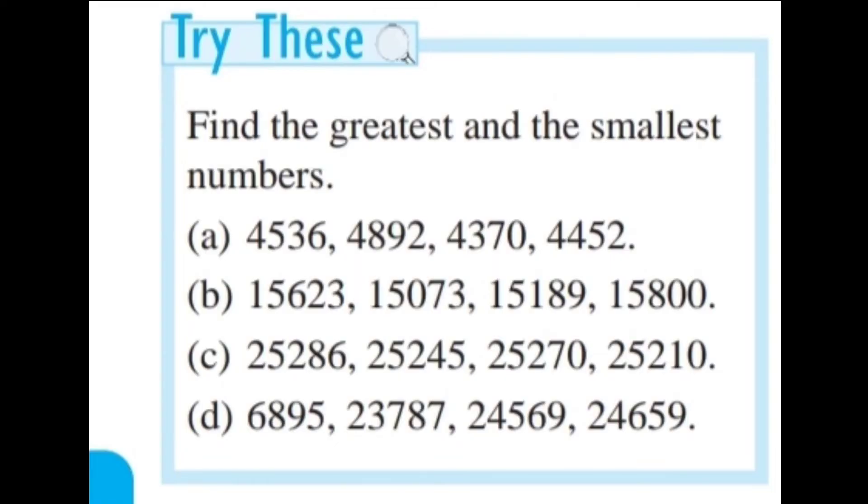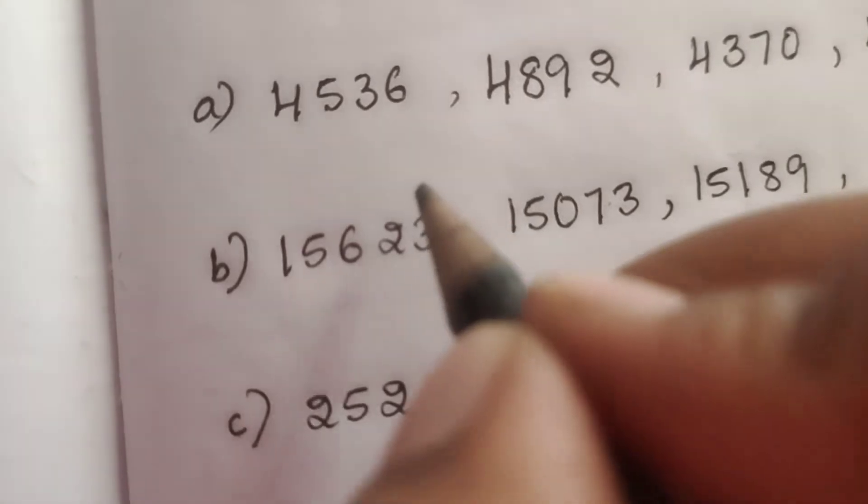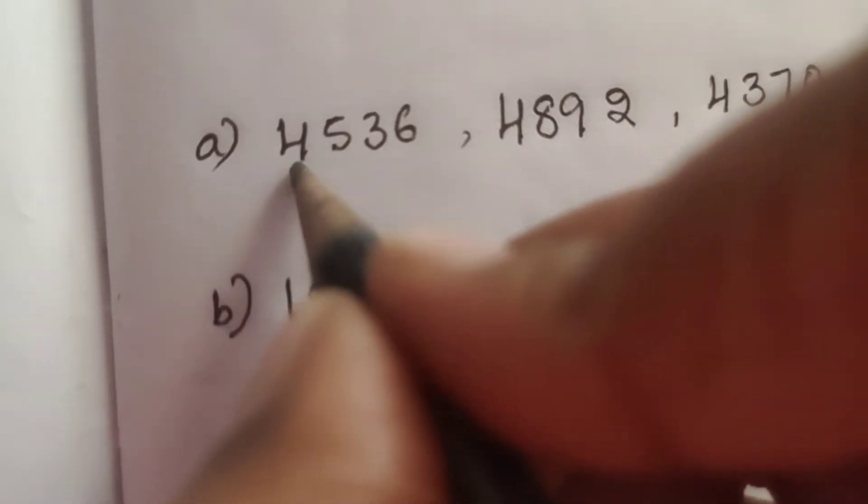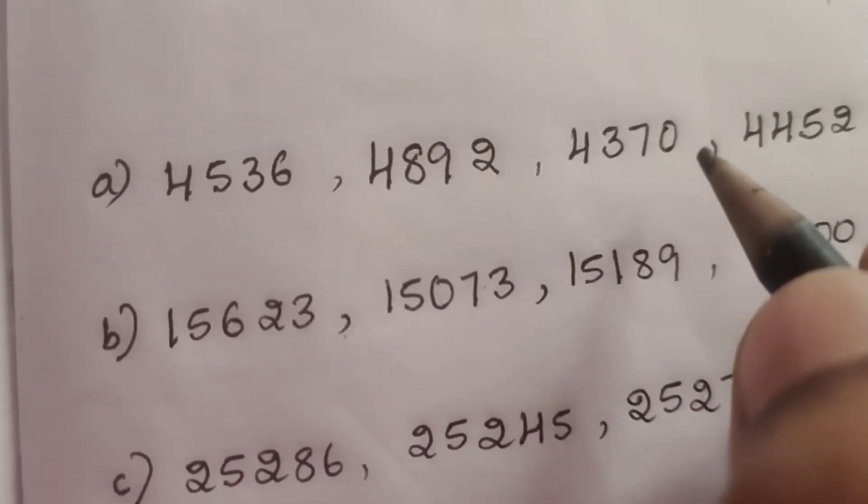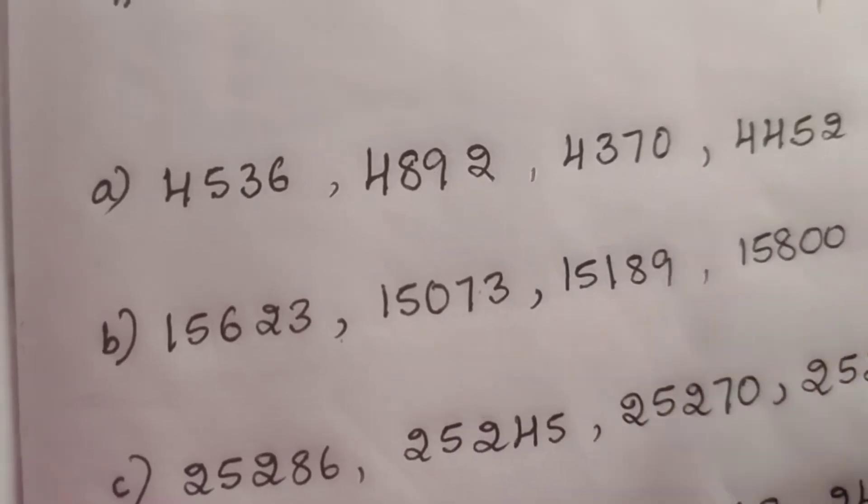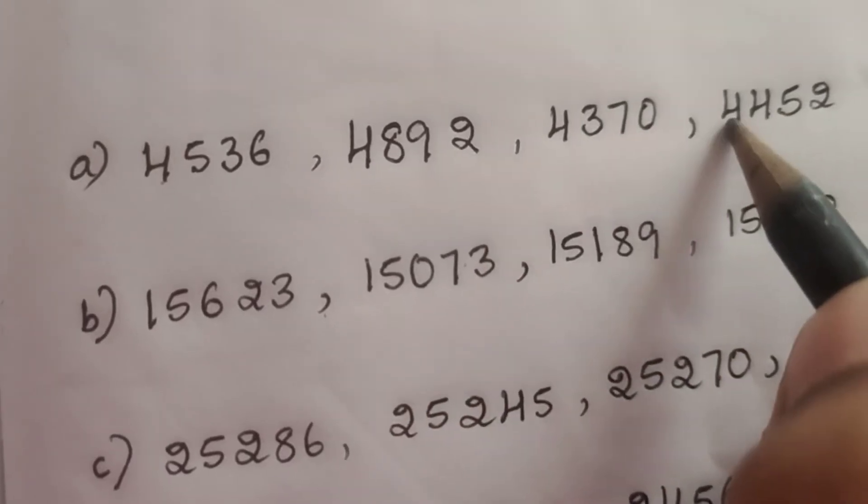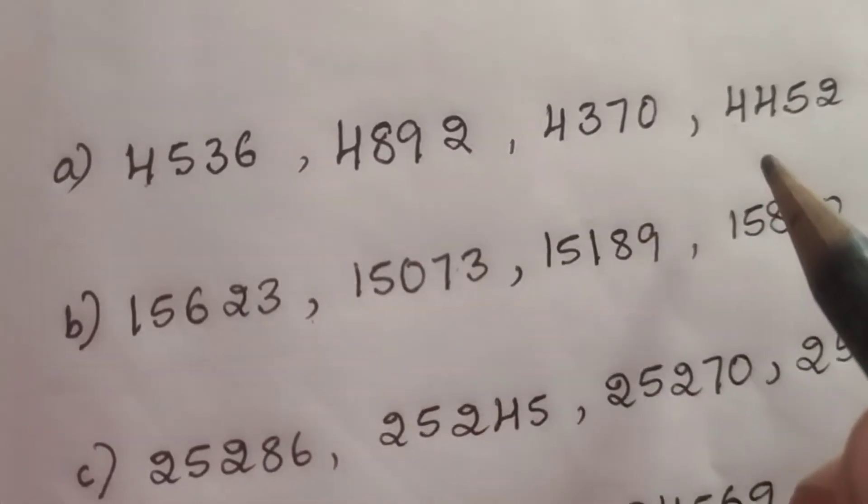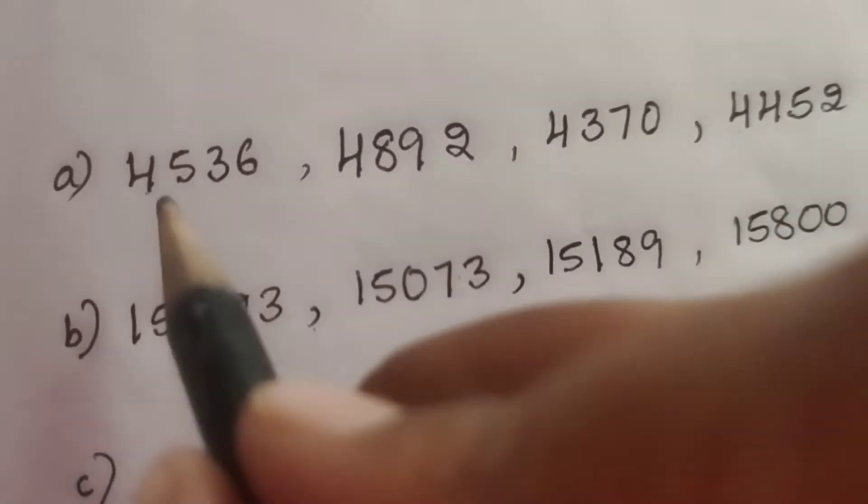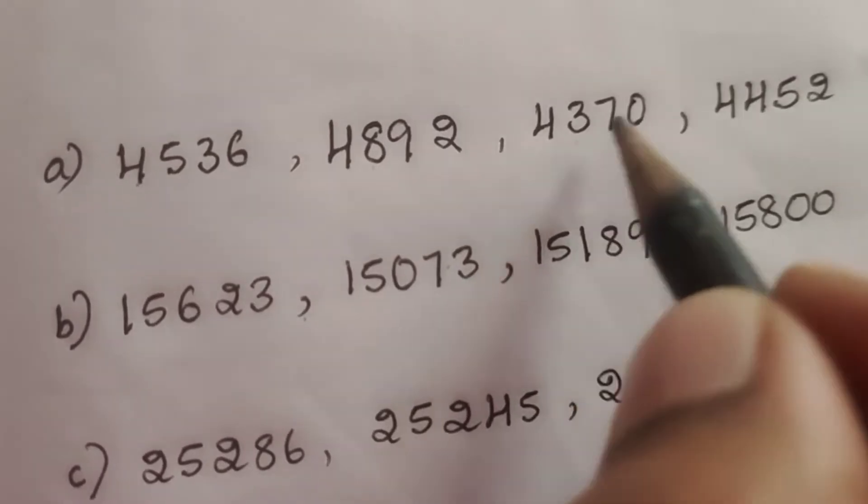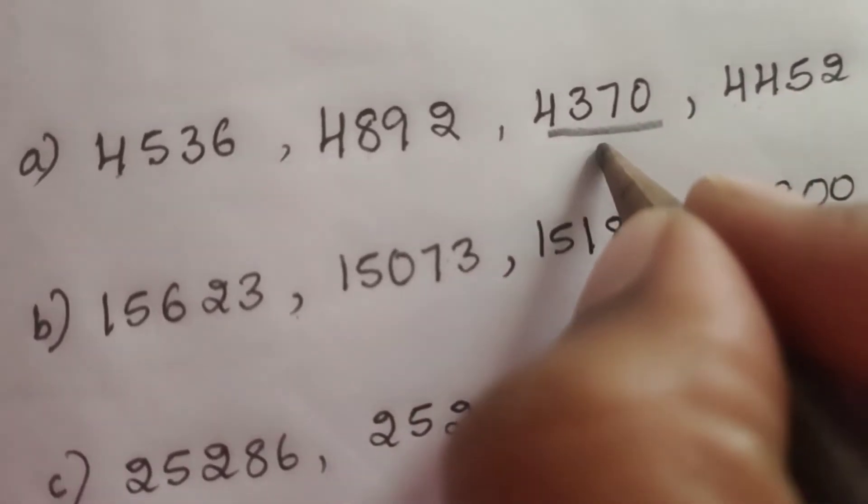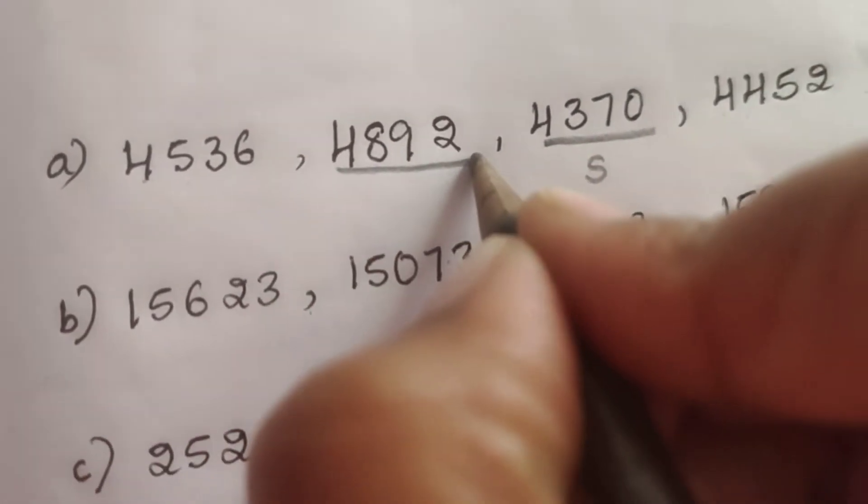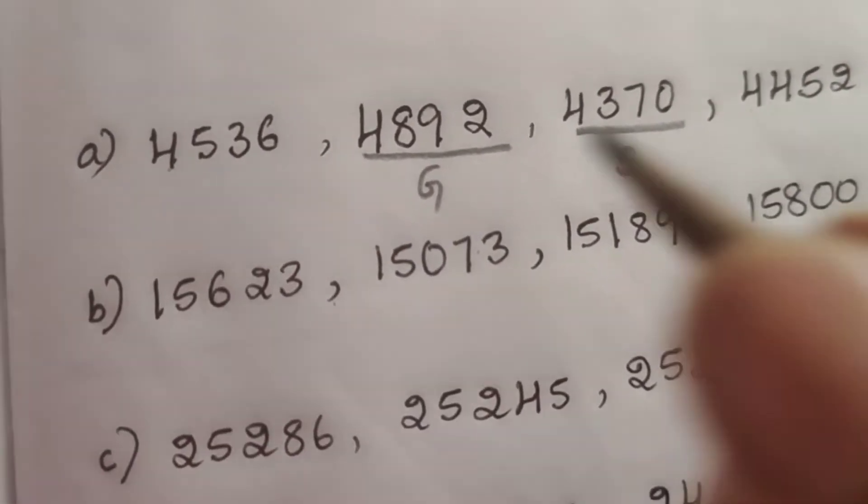Let us solve some more problems on finding the greatest and smallest number. In this problem, first one: 4536, 4892, 4370, 4452. In the thousands place everywhere 4 is there. How to find which is smaller and which is greater? Next we have to see the hundreds. Here 500, here 800, here 300, here 400. So 4370 is the smallest and 4892 is the greatest.